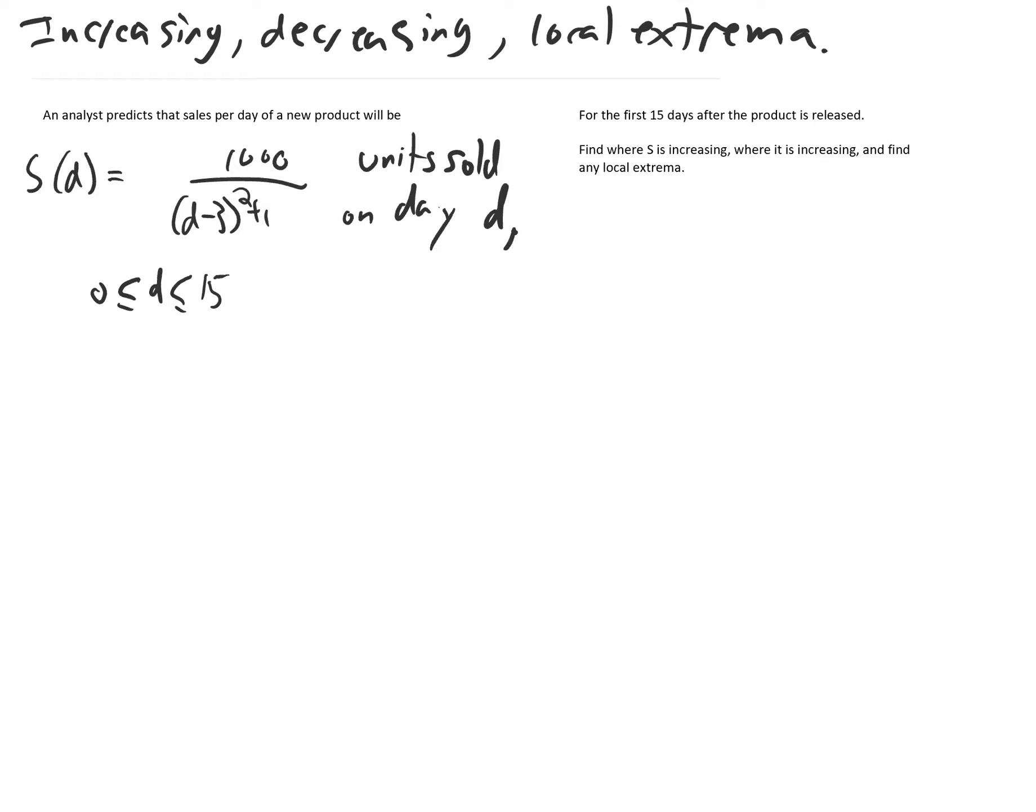An analyst predicts that sales per day of a new product are given by the function S of D equals a thousand divided by quantity D minus three squared plus one in the denominator. That's the units sold on day D for the first 15 days.